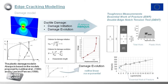Usually this damage parameter is characterized from ordinary tensile tests — you can see the stress-strain curve to the left in the presentation. At some point, typically at the maximum stress level, the damage starts and it goes down to unity, and then the element is eroded. However, in this case the concept of fracture toughness is used, and we will therefore consider the essential work of fracture experiments that were presented during session one.